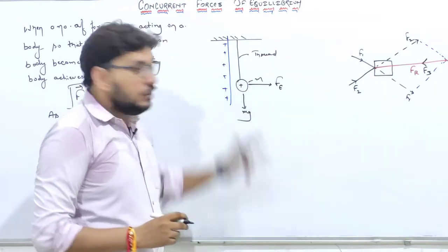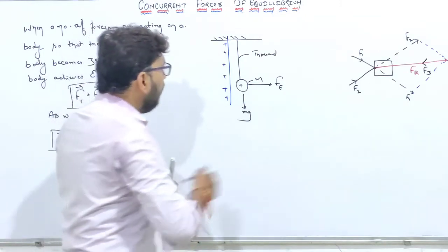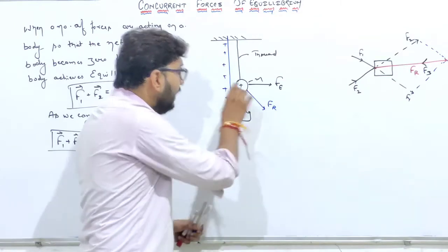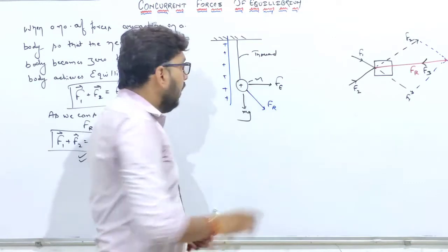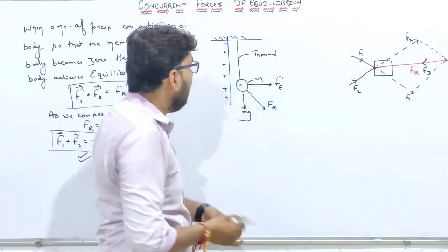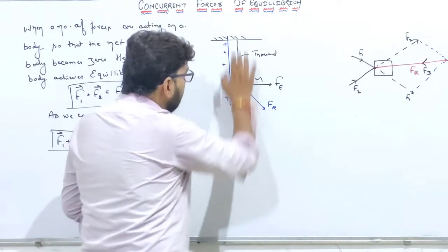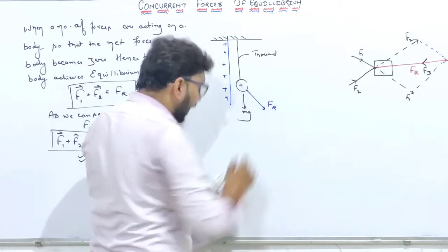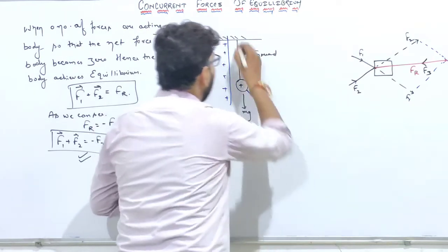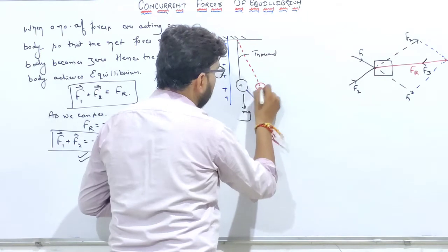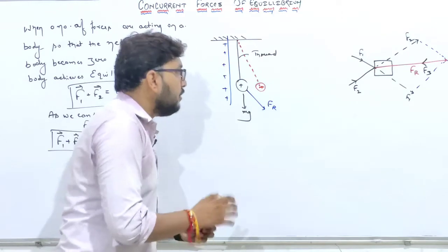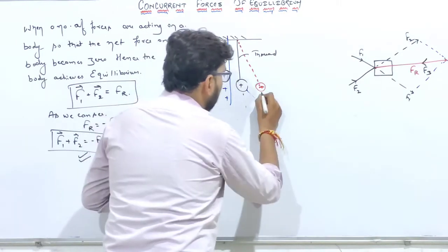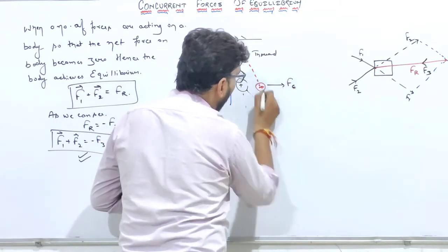Ab ek force neeche ki direction mein hai aur dusri horizontal direction mein. In dono ka jo resultant milega, woh ek diagonal direction mein hoga. Yeh FR dikhata hai ki is charge par net force us diagonal direction mein lag rahi hai. Kyunki yeh thread se bandha hua hai, toh neeche nahin ja sakta. Force lagne ki wajah se yeh charge kuch is tarah shift ho jaayega — thread pehle seedha tha, ab yeh thoda jhuk gaya.